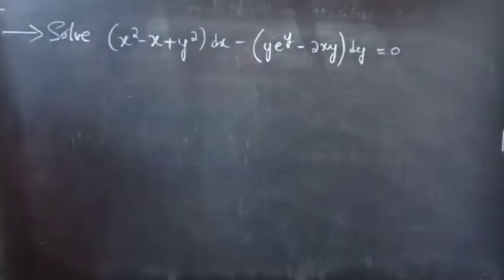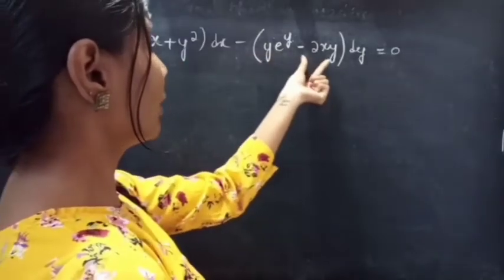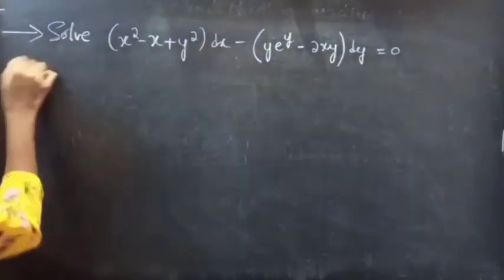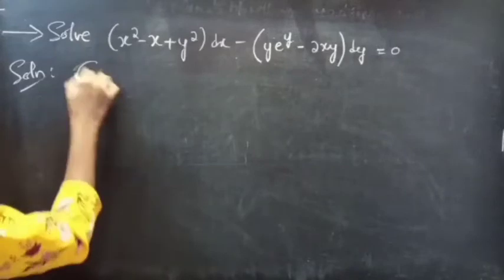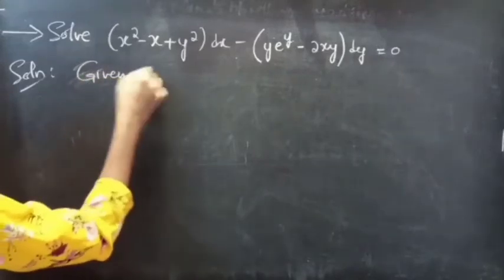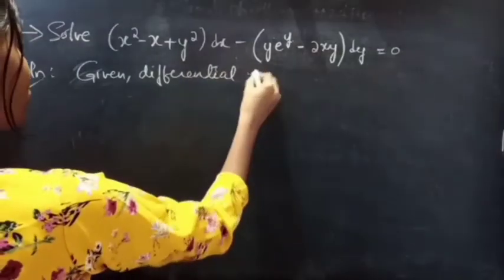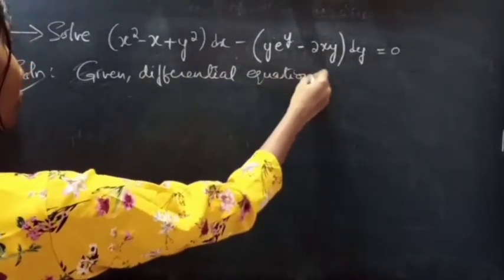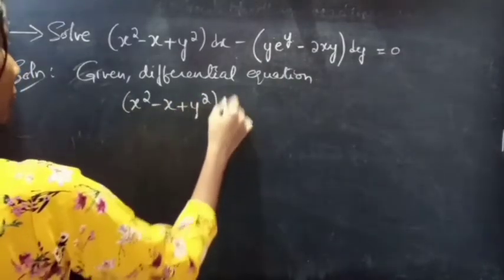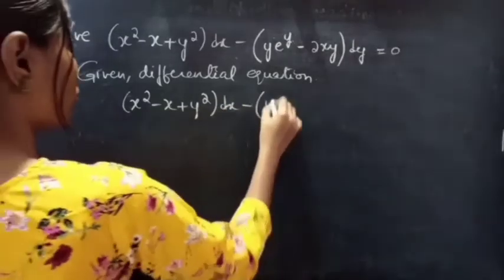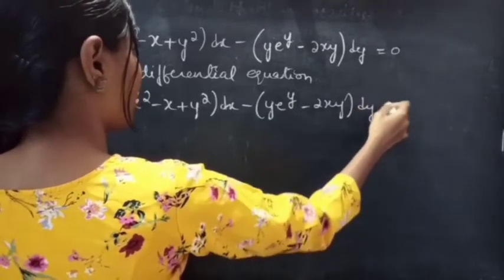Problem: Solve (x squared minus x plus y squared) dx minus (y e^y minus 2xy) dy equals 0.